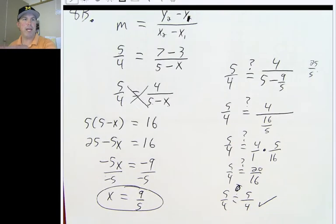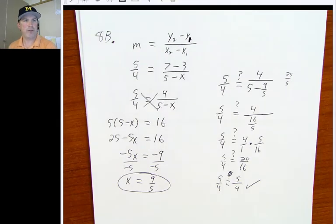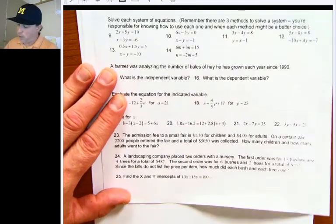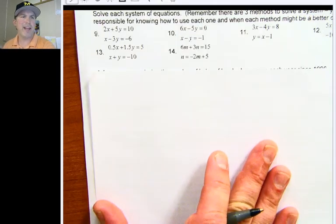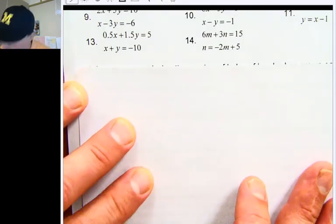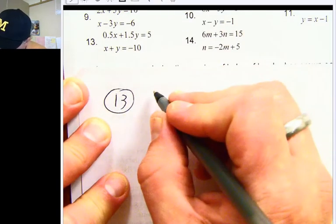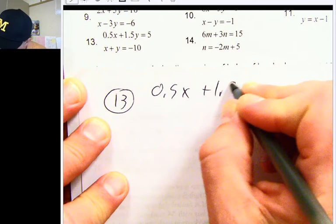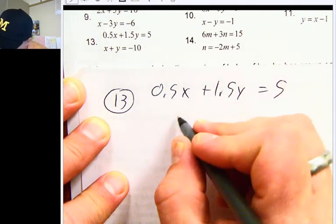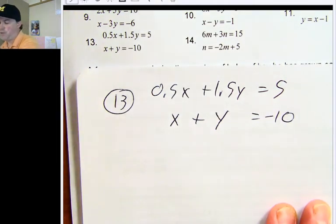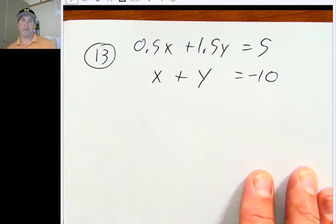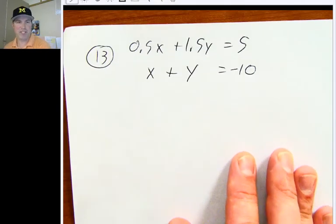That was problem 8B. The second question I was asked was about number 13. I think the reason I got asked about number 13, it's just a normal system of equations, but I imagine I got asked this question because of the decimals that are involved with this problem.